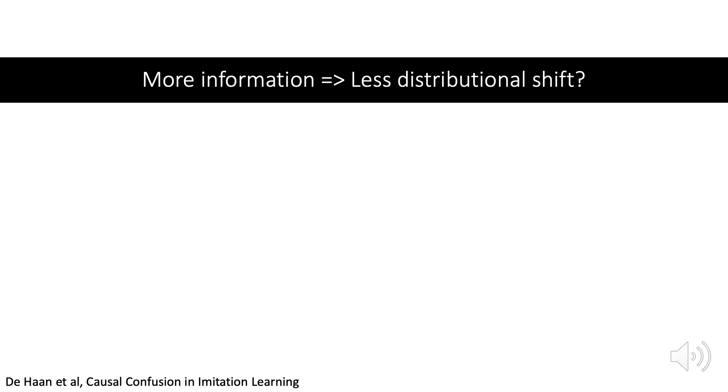The question we ask in the paper is this: If we provide more information to the learner, does it always improve? In supervised learning, this is generally the case. But what happens under distributional shift?